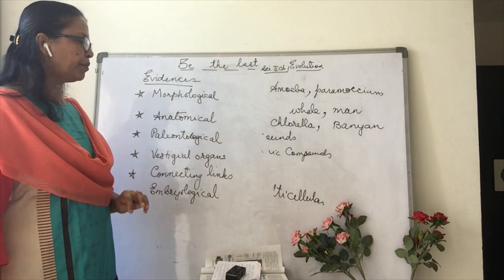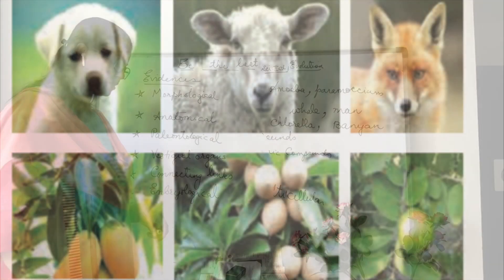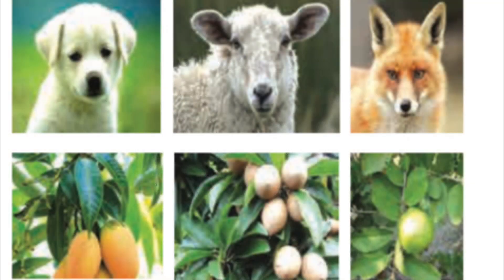Let's discuss morphological evidence. Observe the following images and find the similarities between them. There are various similarities like the structure of the mouth, position of eyes, structure of nostrils, and ear pinnae. In plants, you see similarities like leaf shape, venation, and leaf petiole. All these similarities indicate that there is morphological evidence for evolution.